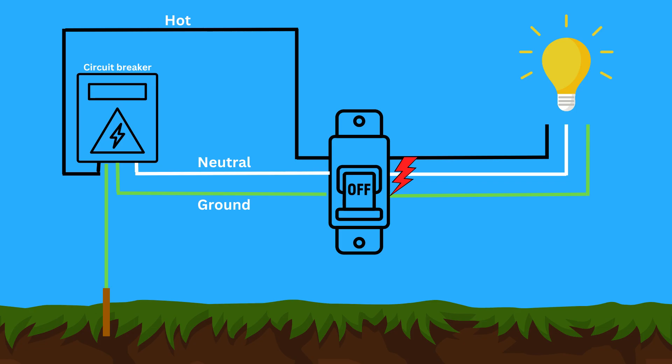Normally, electricity flows through the hot wire to your appliance and back through the neutral wire. However, if a hot wire comes into contact with a metal casing, the current will flow through the ground wire, resulting in a ground fault. This low resistance path causes a significant surge in current, tripping the breaker and cutting off the power to prevent harm.